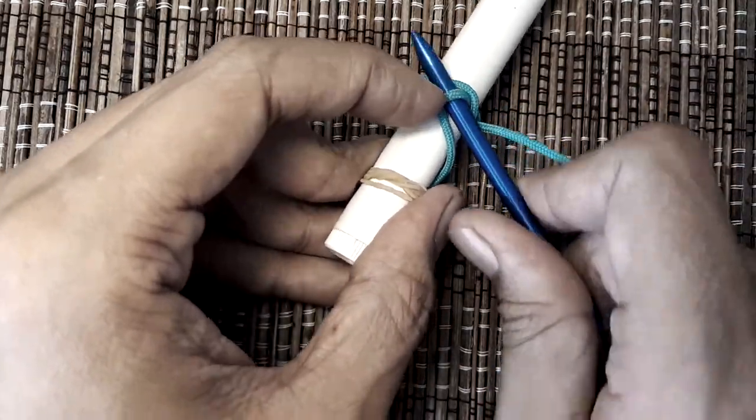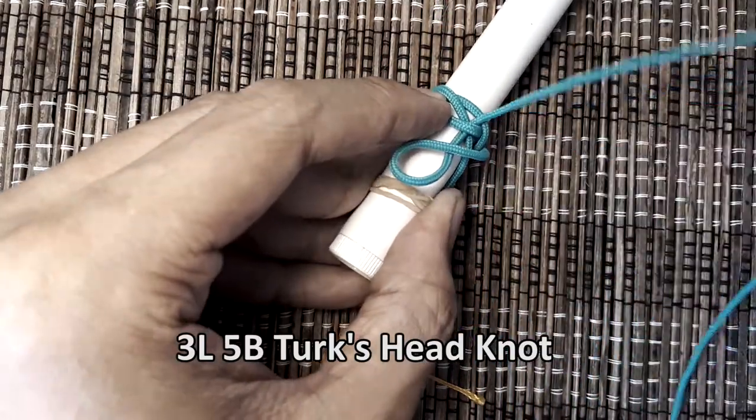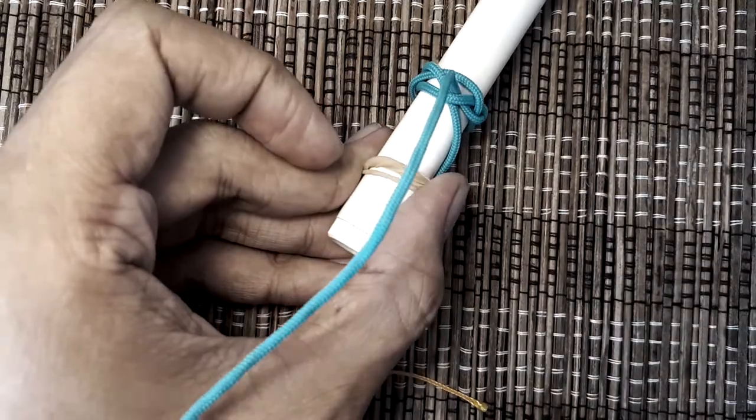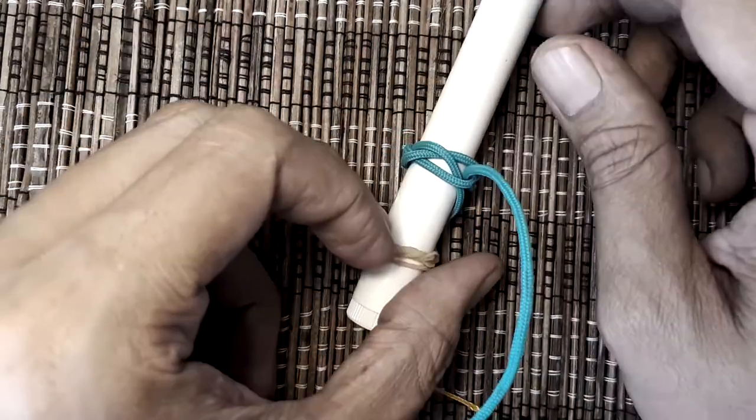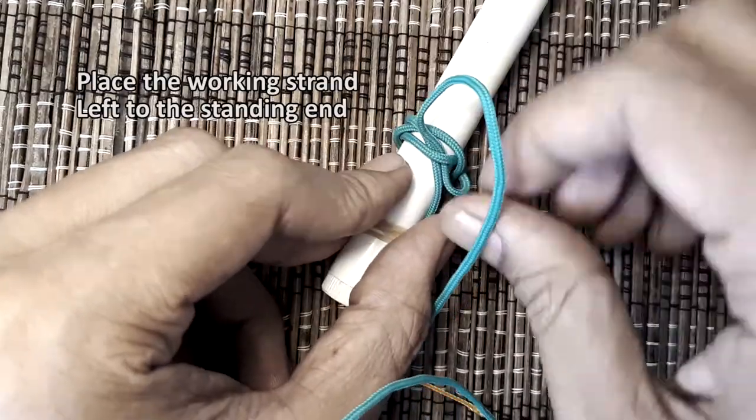If you place your working strand next to the standing end, we will have ourselves a 3-lead, 5-by-turks head knot. Since we're making a Spanish ring knot, we will place our working strand on the left side of the standing end.